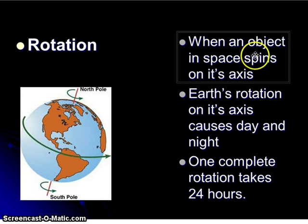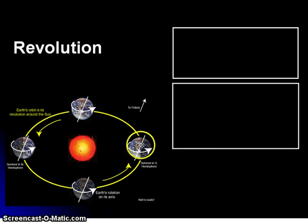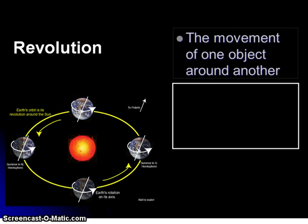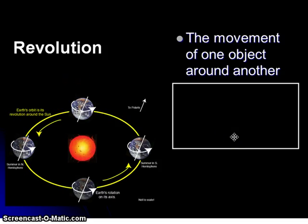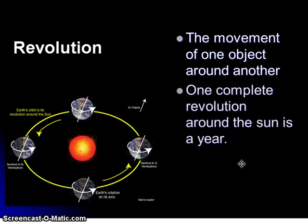Make sure that you write down this first bullet in your note-taking packet. Now let's look at revolution. Revolution is when one object moves around another in space. So the earth moving around the sun would be revolution, or the moon revolving around the earth would be revolution. For the earth to revolve around the sun, it takes 365.25 days for the earth to make one complete trip around our sun.